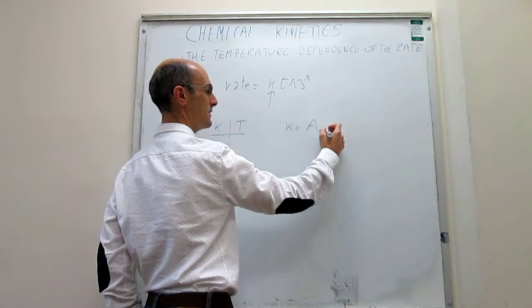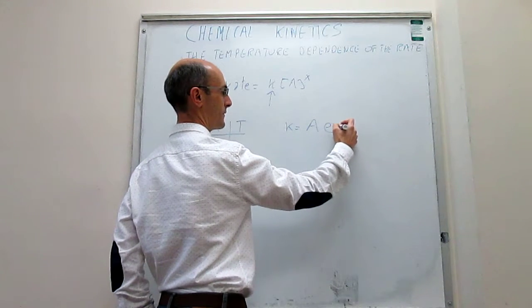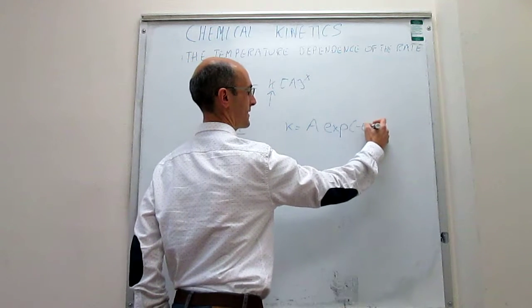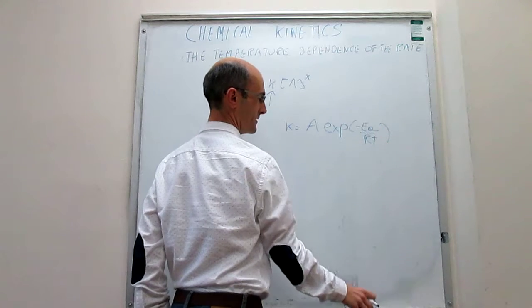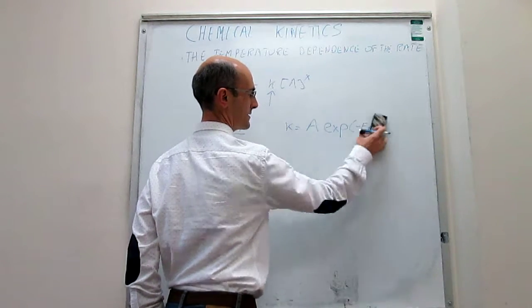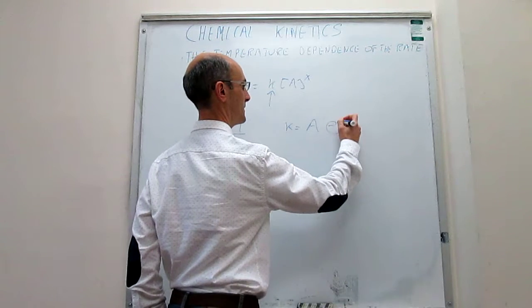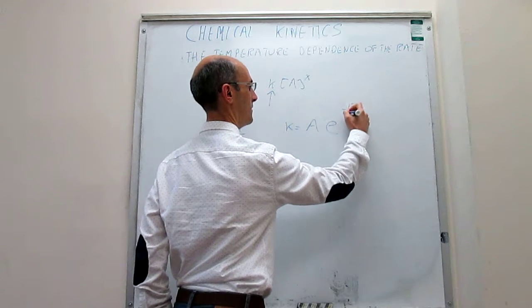And this functional form was like this. The rate constant is equal to a pre-exponential factor that we call A, and then the exponential of minus the activation energy over RT. And this is generally written as k = A*e^(-Ea/RT). So here you have how the rate constant depends on temperature.